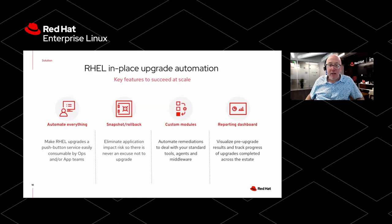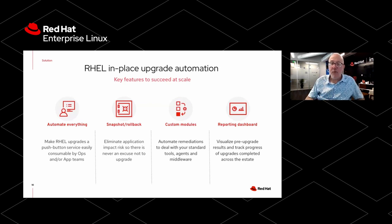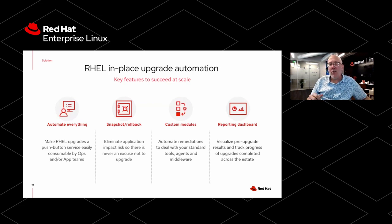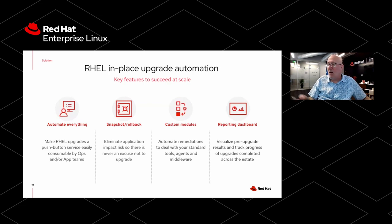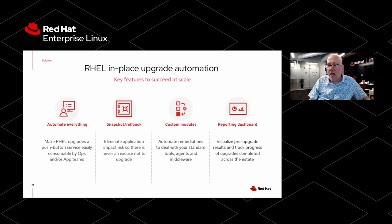Hi, it's Bob Mader with Red Hat. I want to tell you about my automation approach for doing RHEL in-place upgrades at scale. There are four key features that you need to focus on. The first is automating everything. Do your automation and make it consumable for everybody — all your users: developers in the dev environment, app managers, ops teams that manage your production environments. Give them a self-service push button to run end-to-end automation for every part of the RHEL in-place upgrade automation workflow.